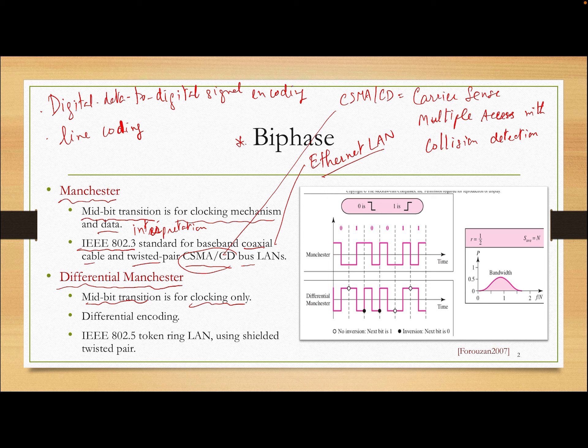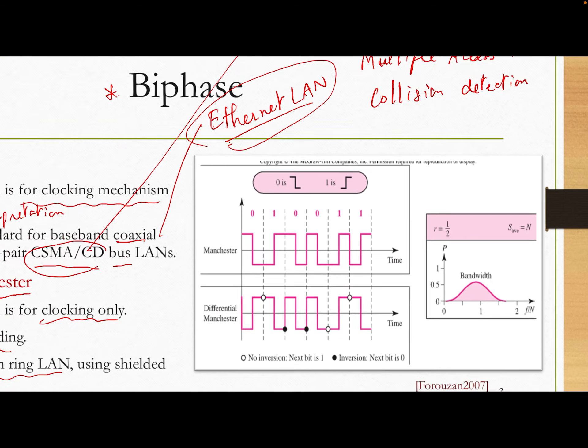Differential Manchester uses differential encoding, which means it detects whether there is an inversion at the beginning of every bit. Its application is the IEEE 802.5 Token Ring standard. Nowadays, people use Ethernet LAN much more than Token Ring, so I will focus on Ethernet. Let's look at an example.